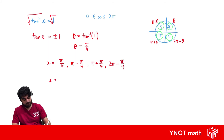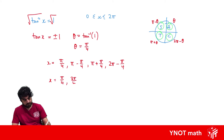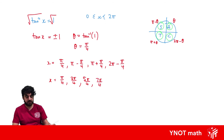So our final answers for x are π/4, 3π/4, 5π/4, and 7π/4 — giving us four answers in total.